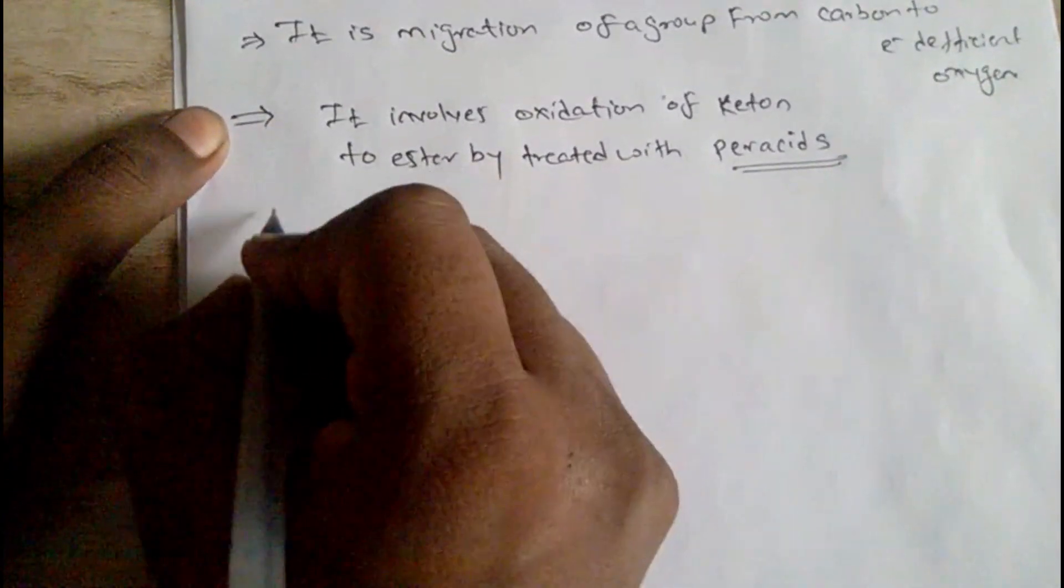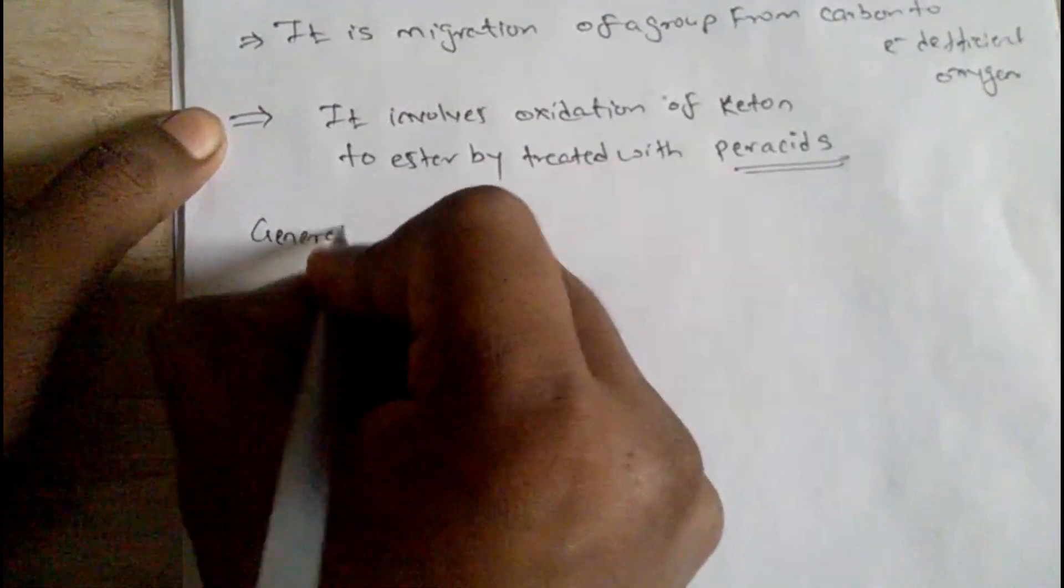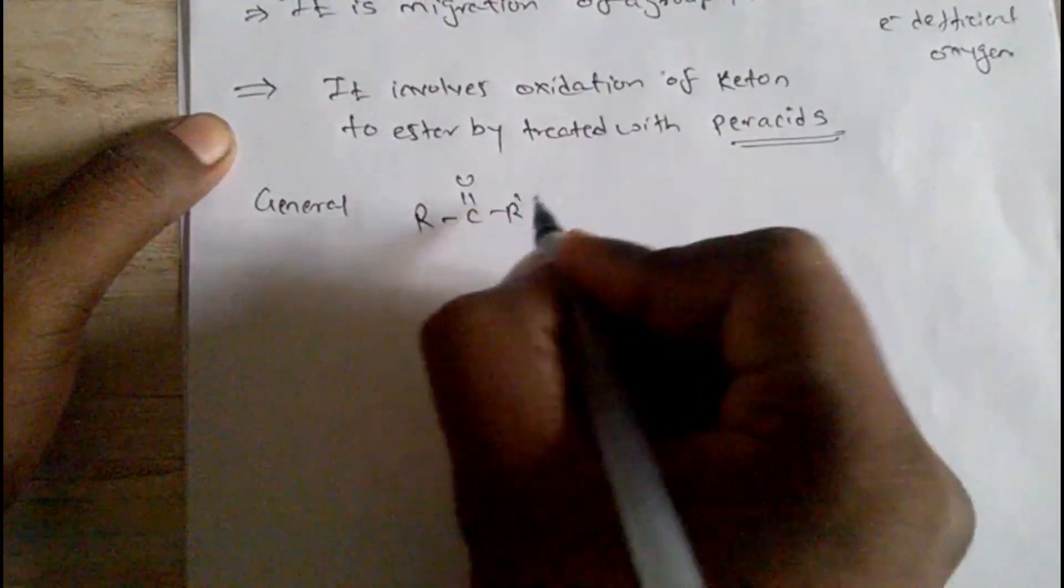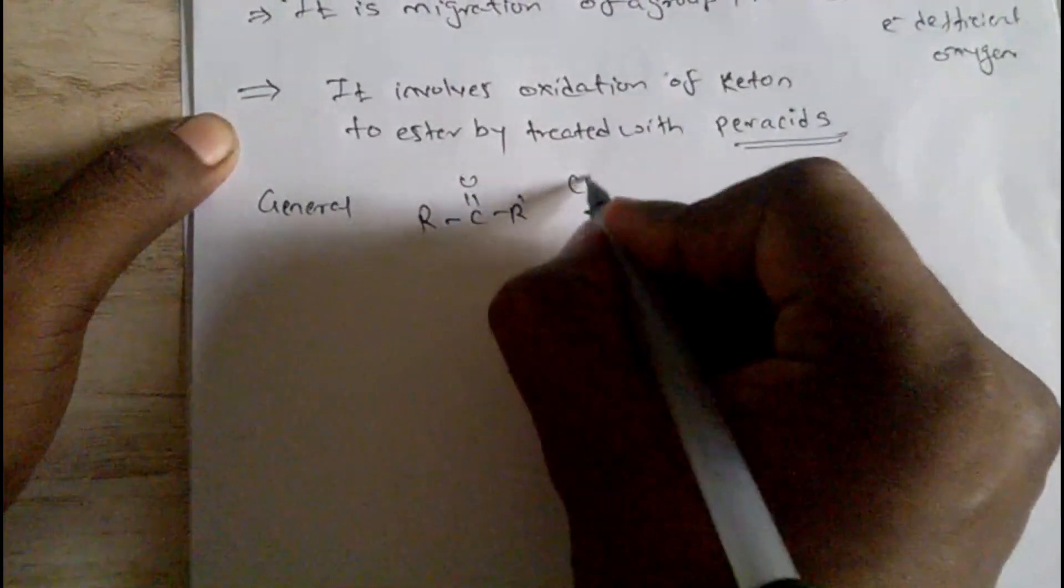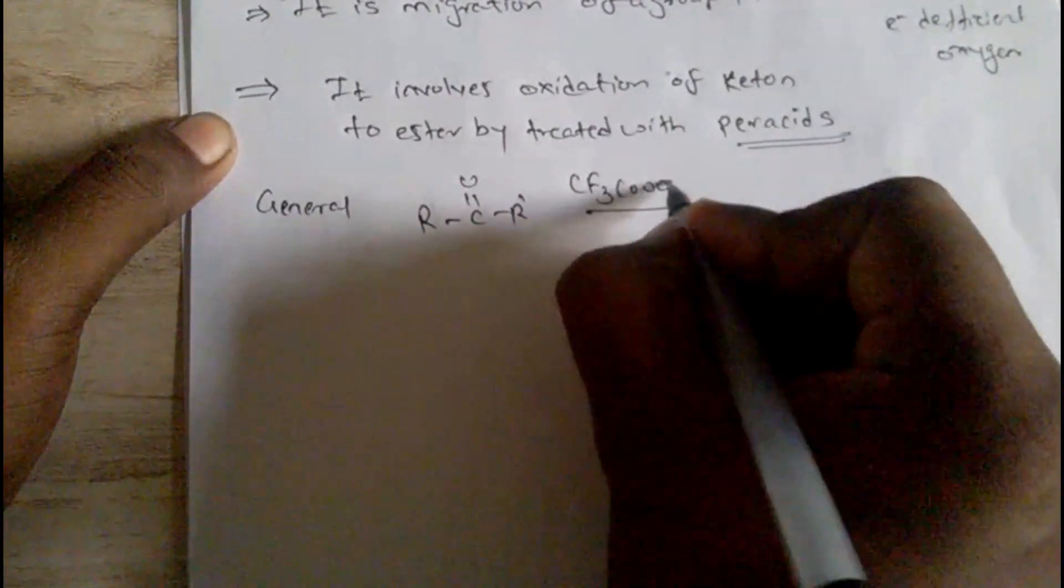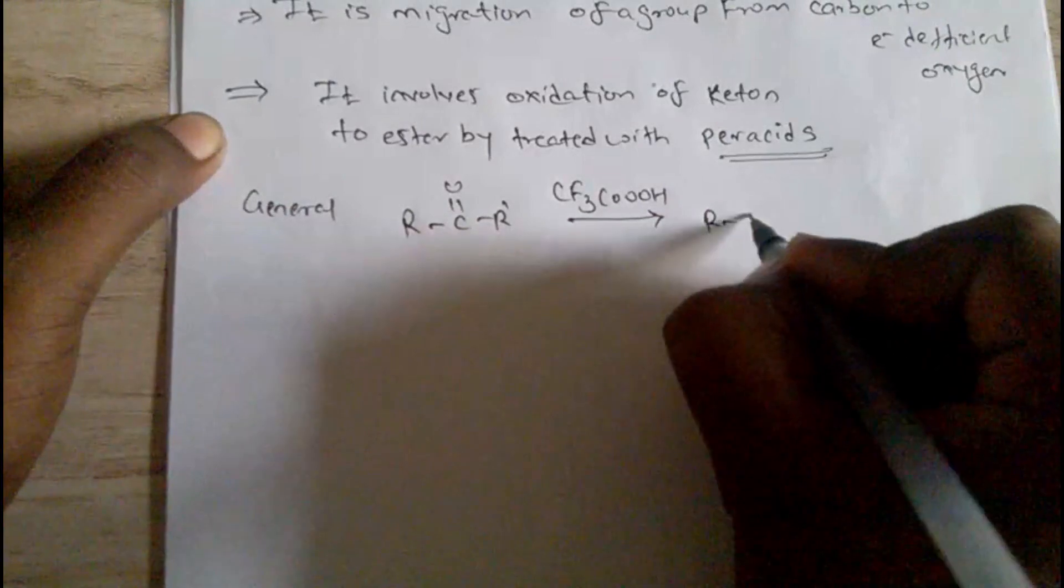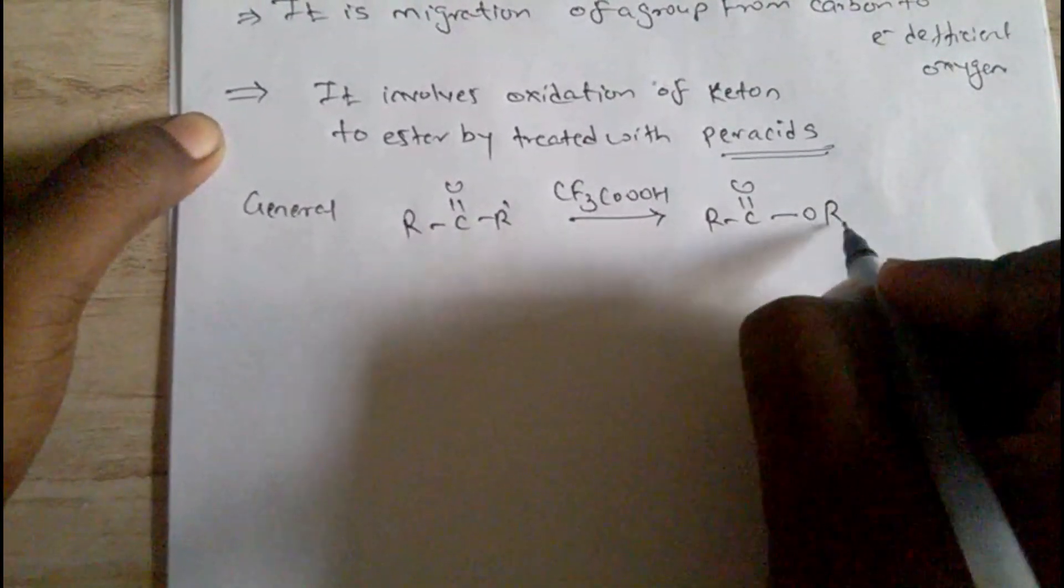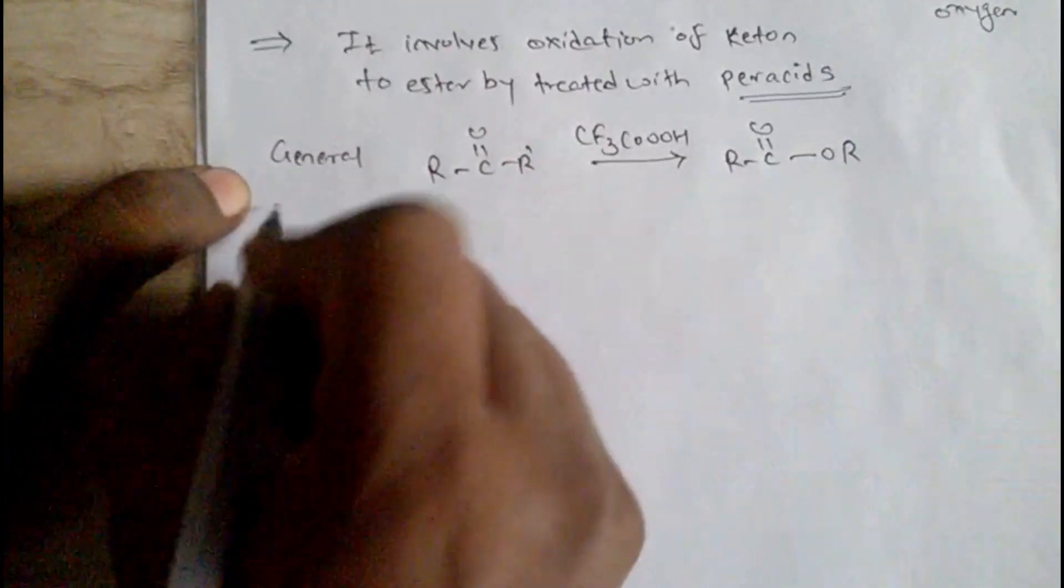Let's see a general reaction. We get a ketone is treated with peracid, we get an ester group.